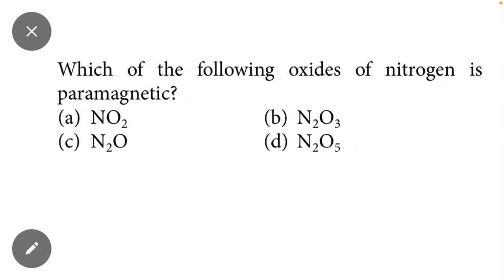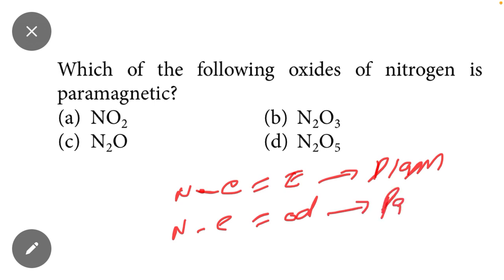Keep in mind, just calculate the number of electrons. If the number of electrons is even, then that compound will be diamagnetic. Similarly, if the number of electrons is odd, then that compound will be paramagnetic. So just calculate the number of electrons.